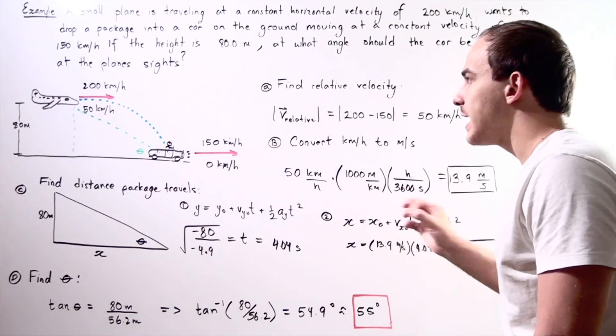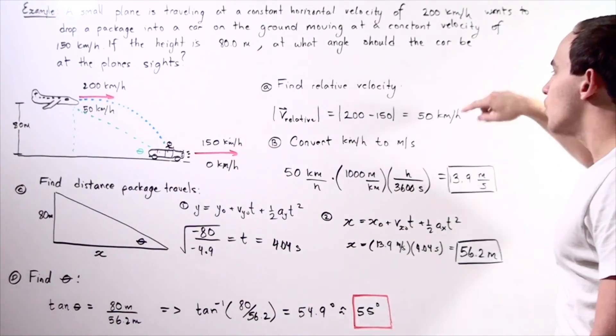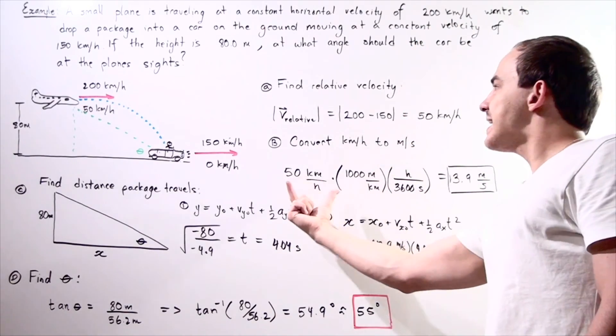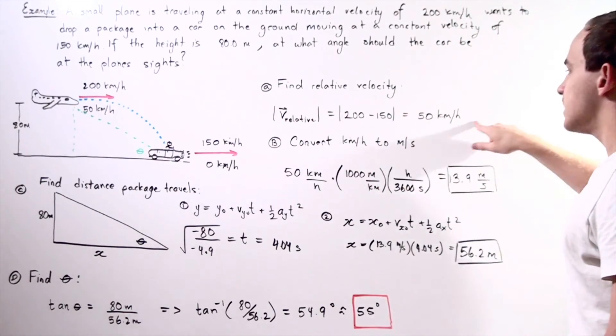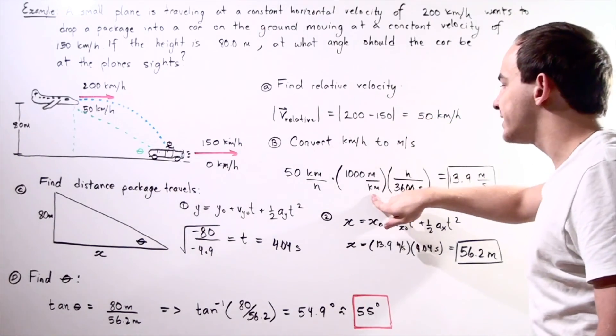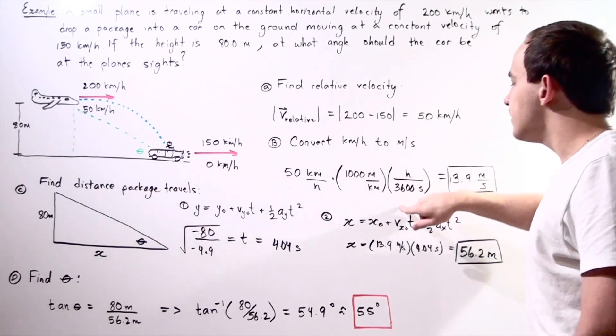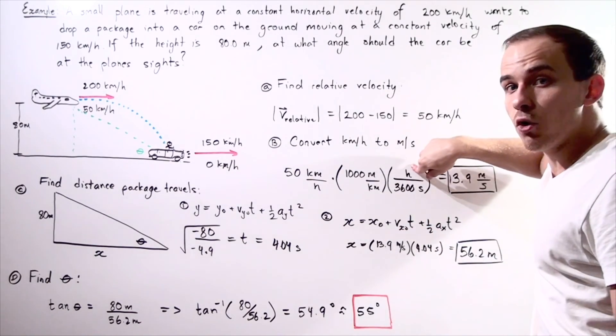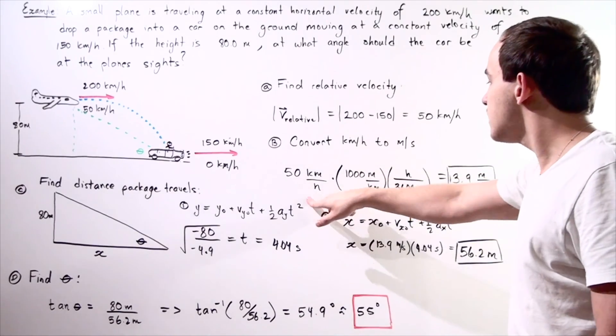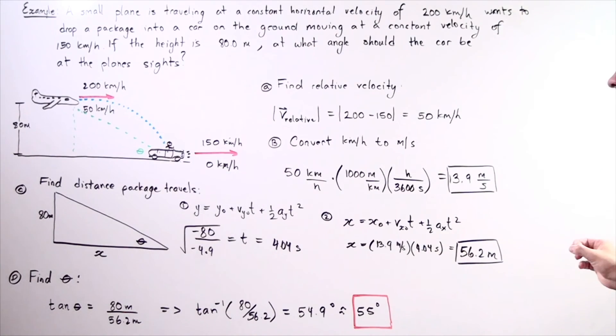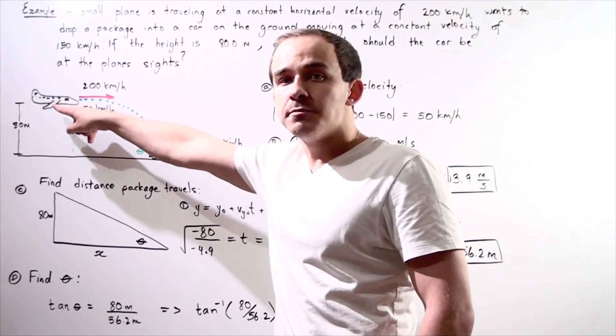In step B, we're converting our kilometers per hour into meters per second. So to convert, we simply take our thing that we obtained from part A, so 50 kilometers per hour, multiplied by 1,000 meters in one kilometer, multiplied by 1 divided by 3,600 seconds per hour. So the hours cancel, the kilometers cancel, and we are left with 13.9 meters per second. So this is our approximation for our velocity of our airplane.